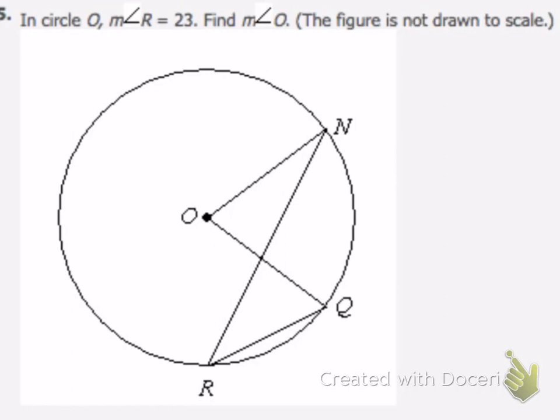of angle R is equal to 23 degrees. So we're given that this angle, angle R, is 23 degrees. And we are told to find the measure of angle O, so what we want to know is this